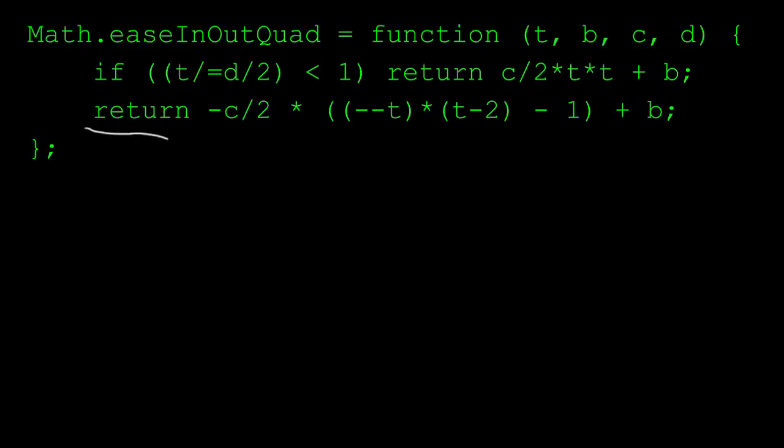If we get past this if statement, then t will be between 1 and 2. And we're in the ease out portion. Again, c is divided by 2, and here t is decremented, putting it back in the range of 0 to 1. Very clever, Robert.